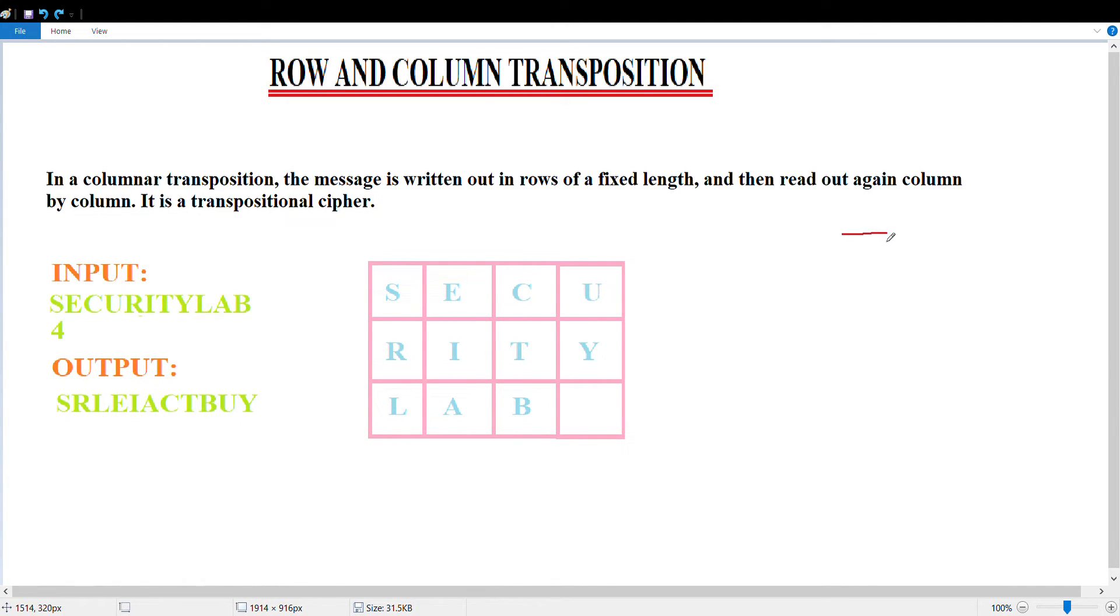In general, you can generalize that when you write a message in rows format, you read it column-wise. If you write a message in columns format, you read it out row-wise. This is the main logic behind row and column transposition, and it is one of the very easy ciphers.